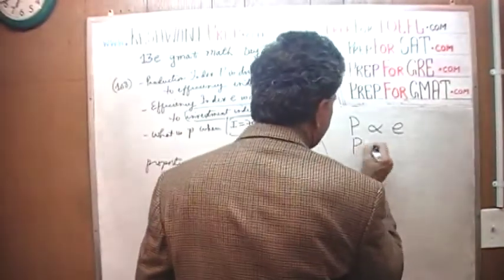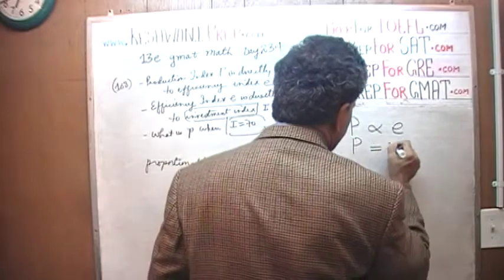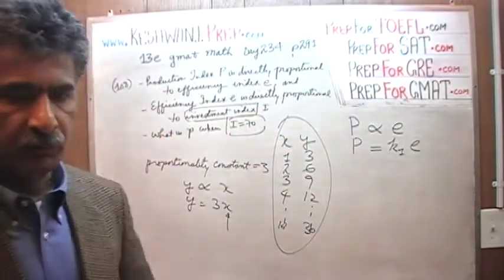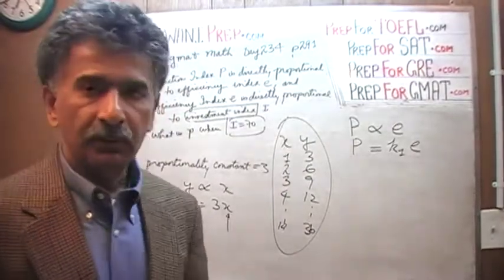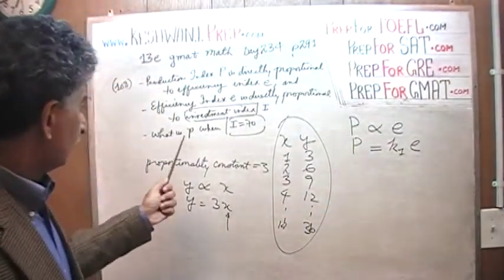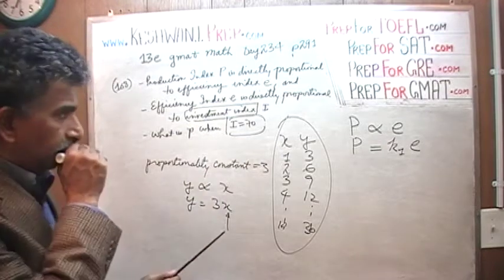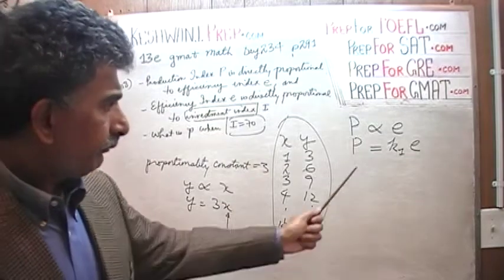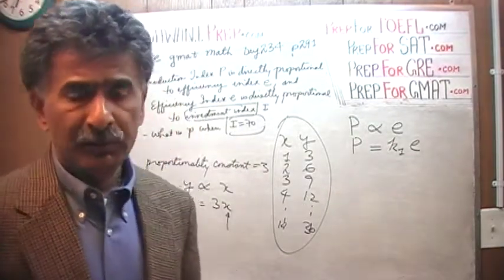Here, we have P that is proportional to E, which means P must equal some constant times E. Let's call it K1, because we're soon going to use the second constant for the second one. In order for us to be able to answer the question that they're asking, which is, what's the value of P when I equals 70, we would need the value of K.